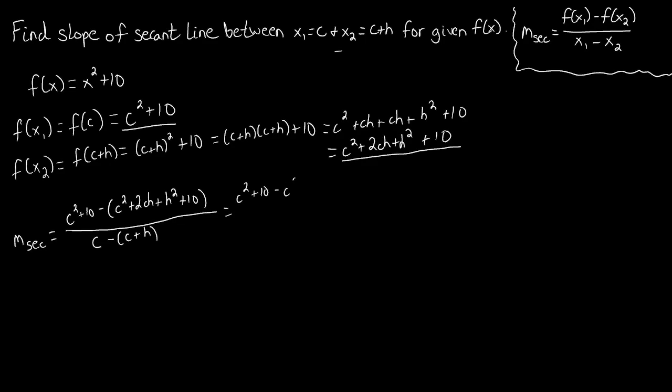What we have is c squared plus 10 on the top, minus c squared, minus 2ch, minus h squared, minus 10, all over c minus c, minus h.